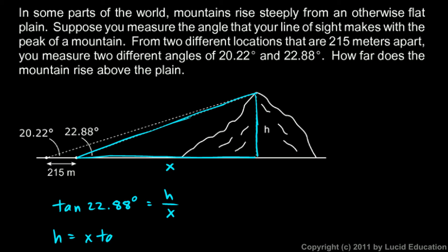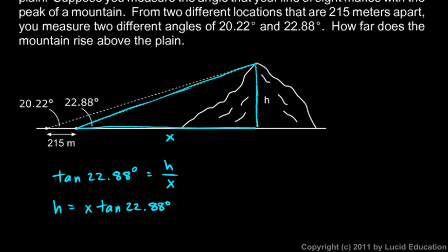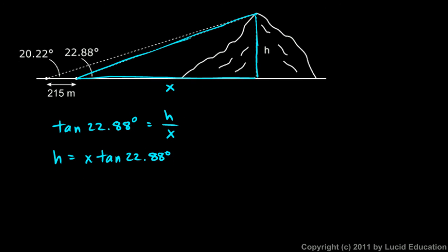I know that the tangent of 22.88 degrees is going to be h over x. So I'm going to solve that for h: h is going to be x times the tangent of 22.88 degrees. The tangent of 22.88 degrees is a number I can put in the calculator, and that comes out to 0.422, so I can say h is 0.422x.